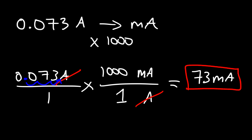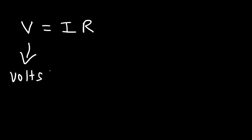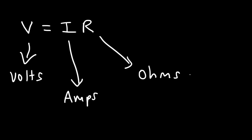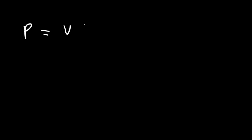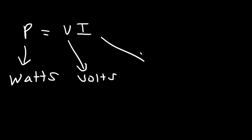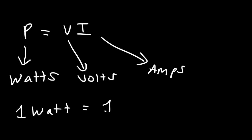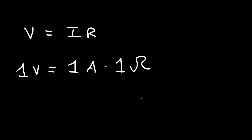Now you know how to convert between amps and milliamps. When dealing with electronic circuits, there are some formulas to be familiar with. The first is Ohm's law: voltage equals current times resistance, where V is voltage in volts, I is current in amps, and R is resistance in ohms. Another equation is power equals voltage times current — P = VI — where power is in watts, voltage in volts, and current in amps. So 1 watt equals 1 volt times 1 amp, and from Ohm's law, 1 volt equals 1 amp times 1 ohm (the omega symbol).